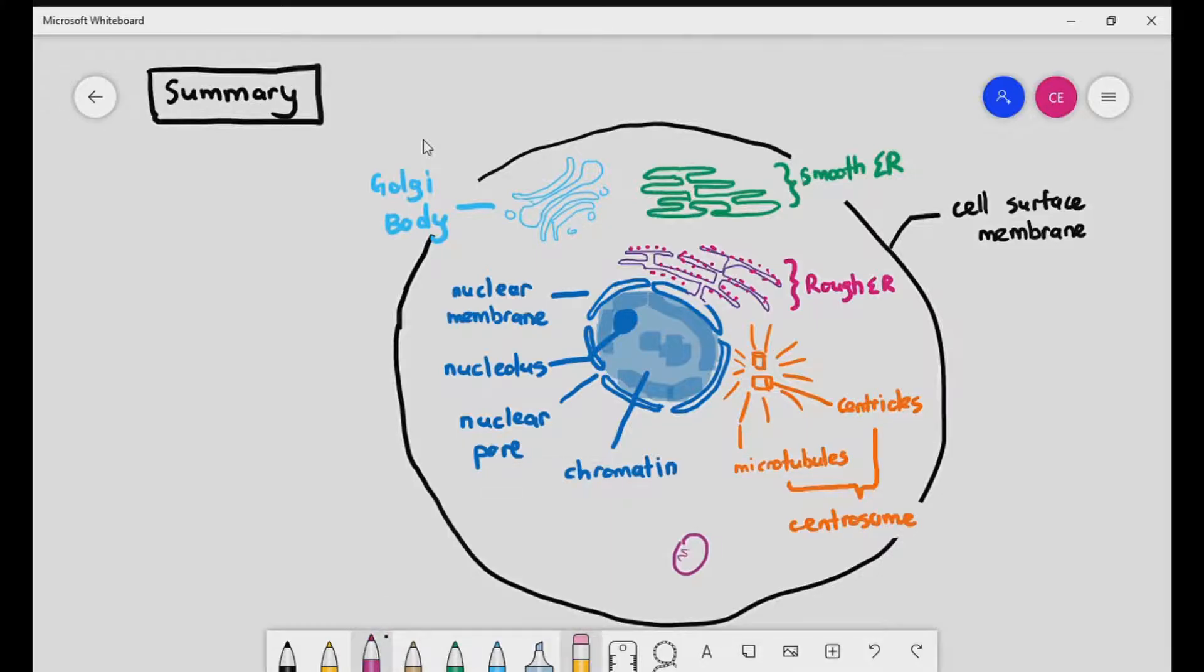We also have a double membrane organelle, where it has a smooth outer membrane and a folded inner membrane. That is the mitochondria.